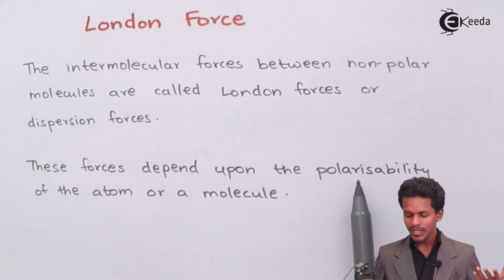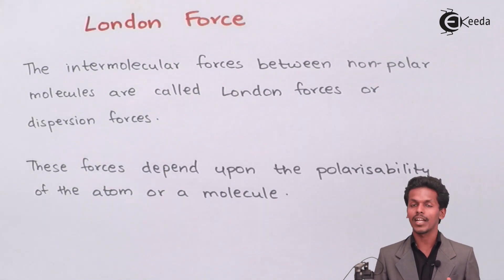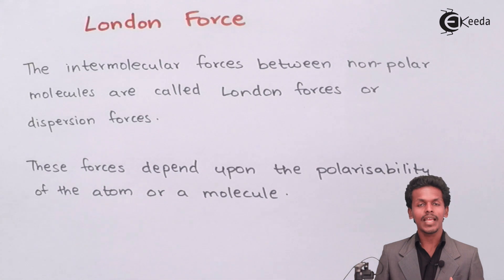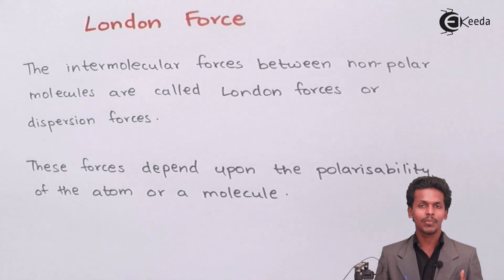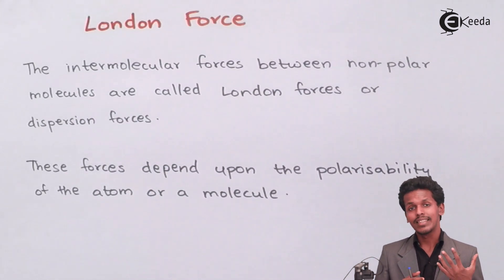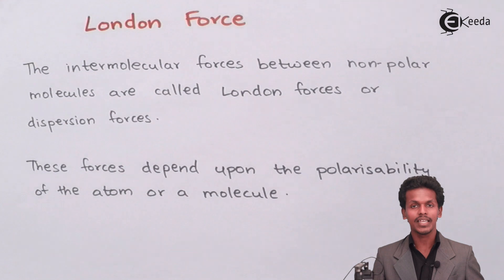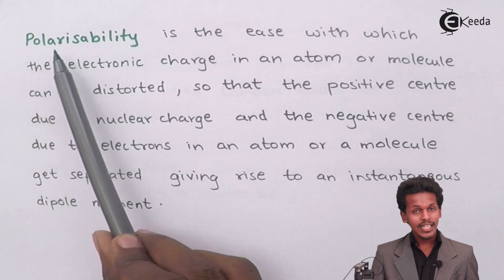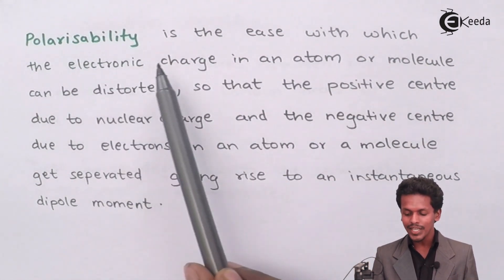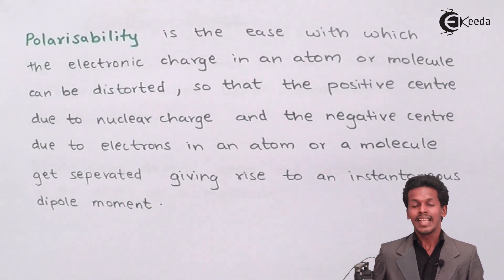The force depends upon the polarizability of the atom or molecule. If the atom has a capacity to polarize itself — that is, to separate the positive charge and negative charge within it — then this indicates there are chances to form an interaction with other molecules. Polarizability is the ease with which the electronic charge in an atom or molecule can be distorted.